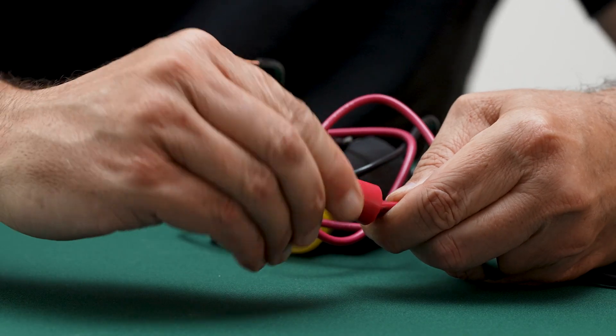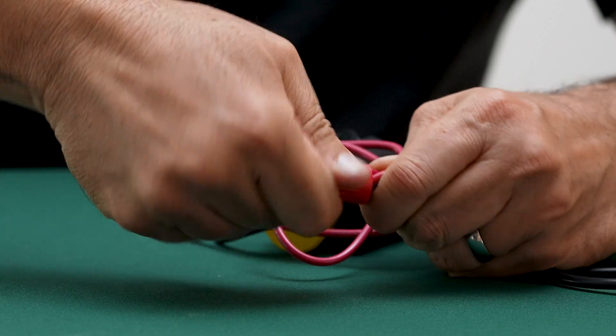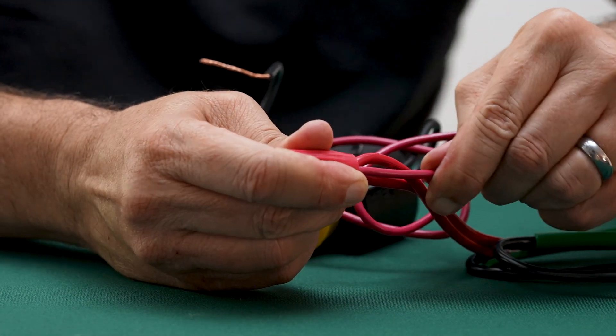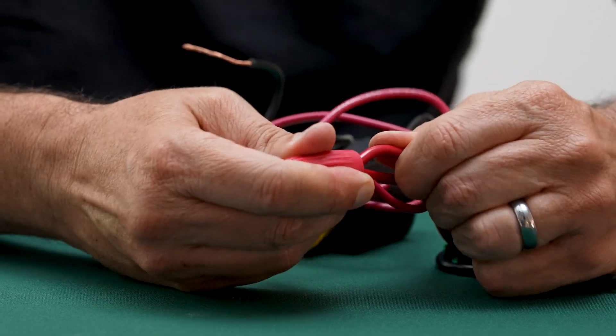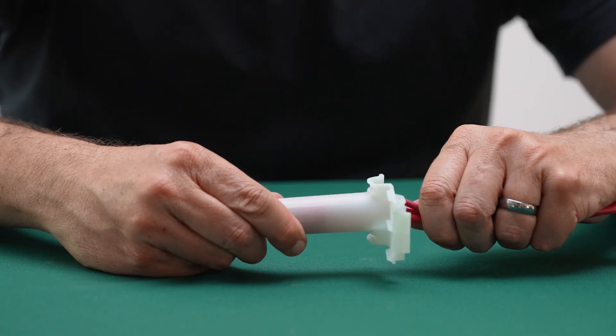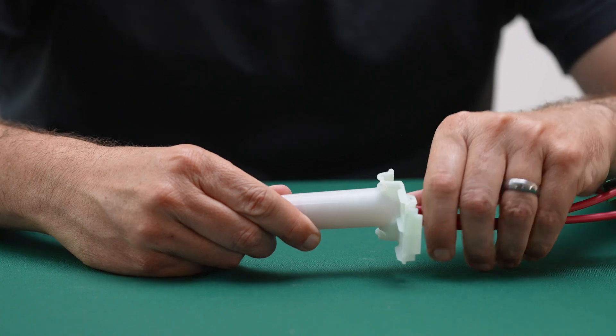Twist on the nut until tight and tug on each wire to ensure it's locked in. Then insert the splice completely into the WC100 tube. Verify that it is fully seated.